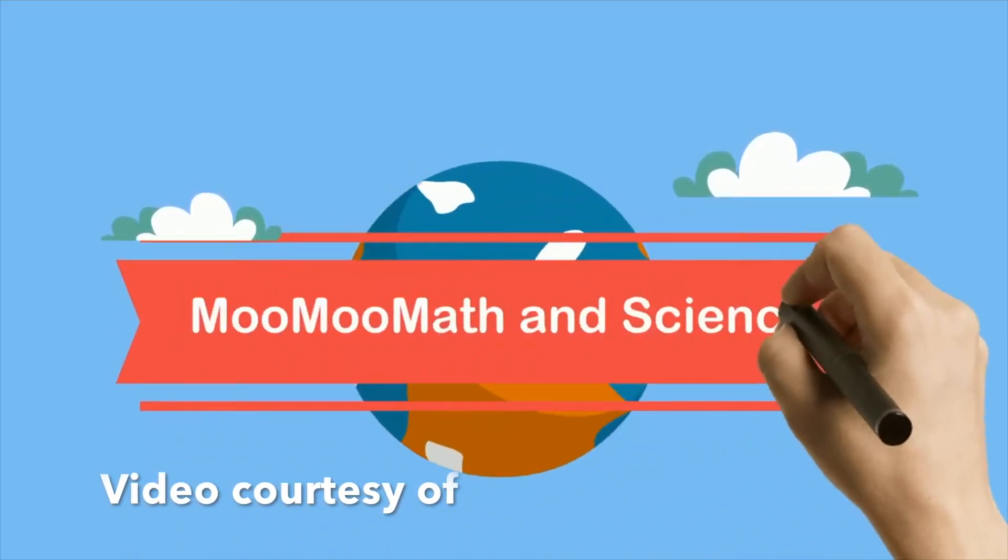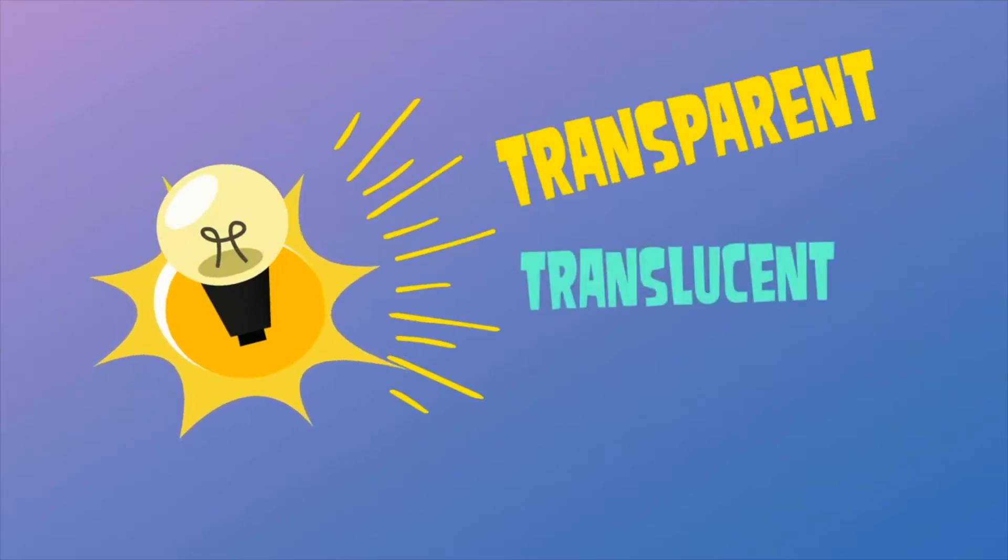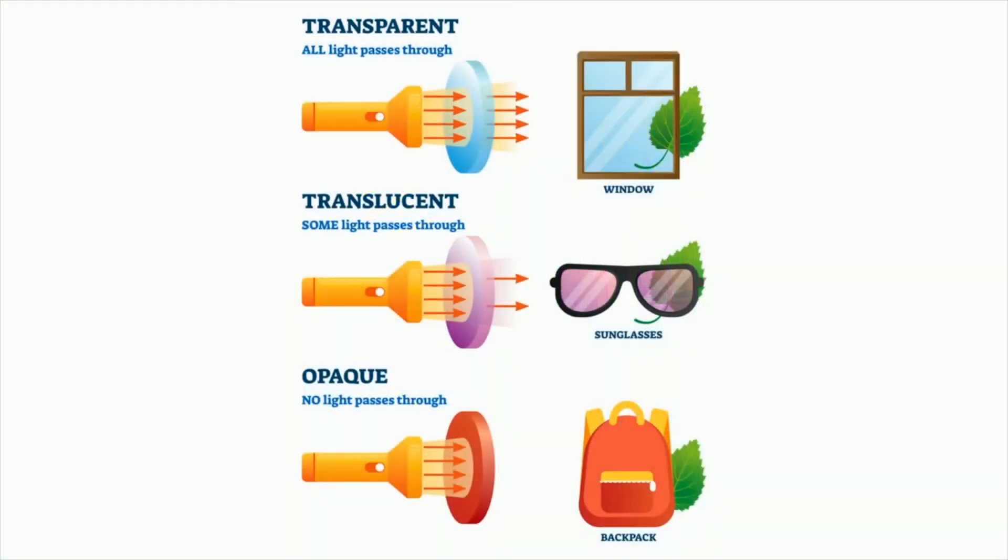Light is a form of energy which is given by luminous objects like the sun, bulb, and candle. We have learned that light can pass through transparent materials like glass, water, clear plastic, and air.